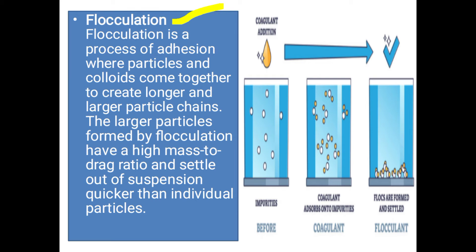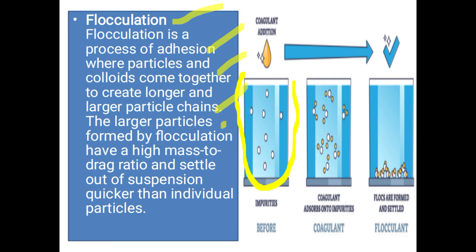Flocculation is a process of adhesion where particles and colloids come together to create longer and larger chains. These larger particles formed by flocculation have a high mass-to-drag ratio and settle out of suspension much quicker than individual particles. This process is known as flocculation.